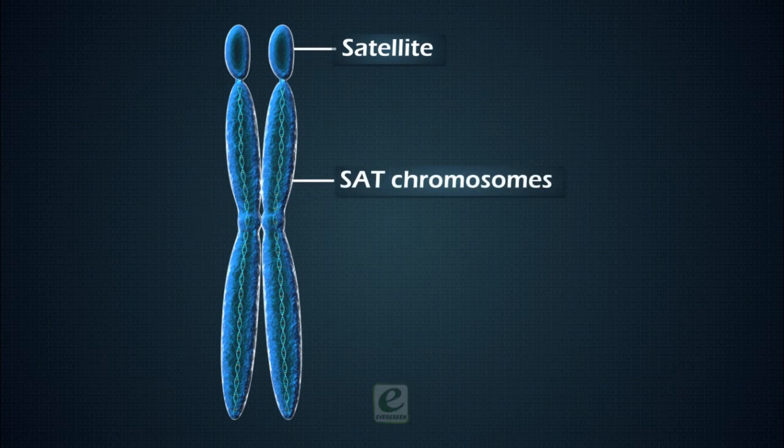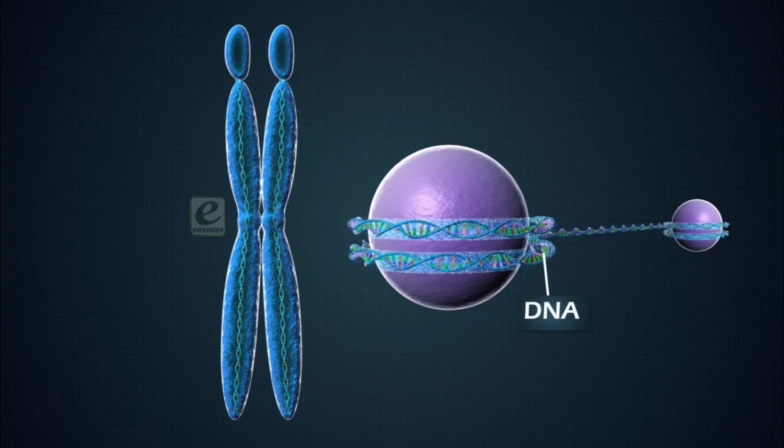The chromosome having nucleolar organizer also possesses a small fragment or knob-like structure called satellite. Such chromosomes are known as SAT chromosomes. The terminal regions on either side of the chromosomes are known as telomeres.